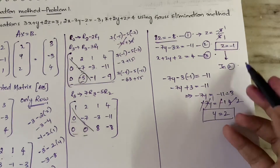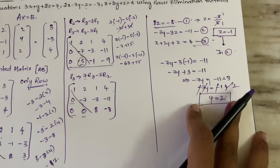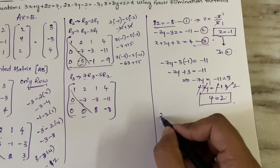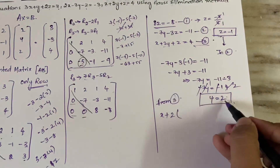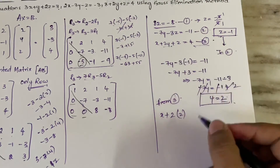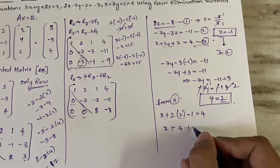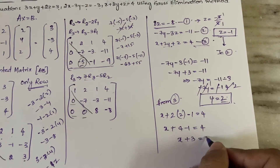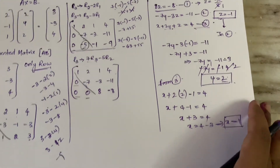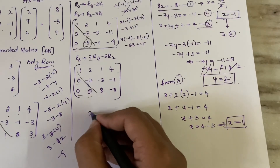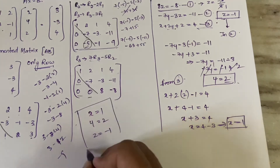Now substitute z = -1 and y = 2 into equation 3 to get x. From equation 3: x + 2×2 + (-1) = 4, so x + 4 - 1 = 4, x + 3 = 4, therefore x = 1. So the values we got are: x = 1, y = 2, z = -1.